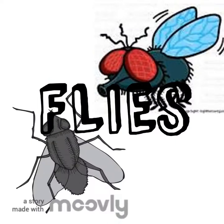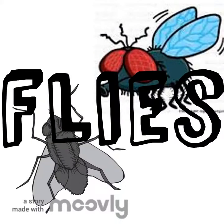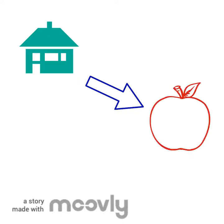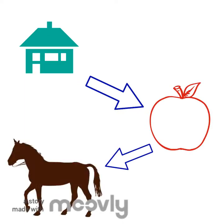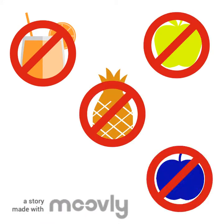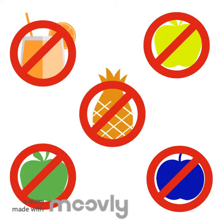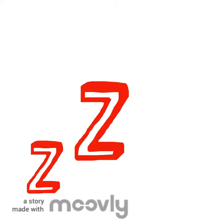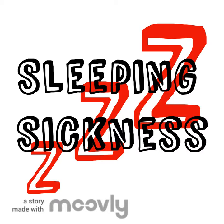Flies — ugh, we all know flies. From house to fruit to horse, flies are everywhere. Flies are known for ruining people's food, but also spreading diseases. Flies spread diseases like sleeping sickness and are just an overall nuisance.